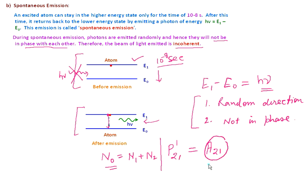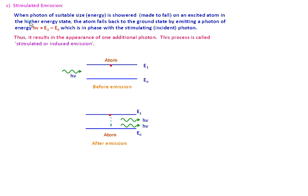So to summarize: the spontaneous emission process can be described using only one atom, but the transition probability must be defined using a large number of atoms. The spontaneous emission does not depend on any external source — it emits the photon spontaneously through this process.